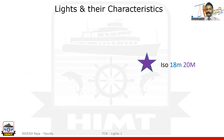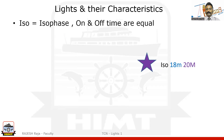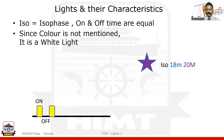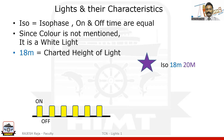Isophase means on and off times are equal. Color not mentioned, so it's white. The light is on, then off, with the duration of on and off exactly the same. 18 meters is the charted height, and 20 nautical miles is the nominal range.